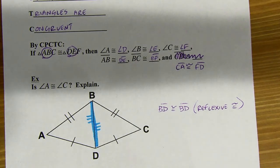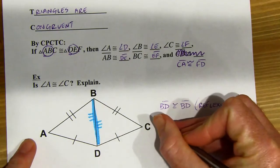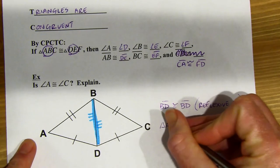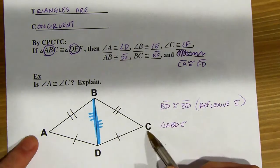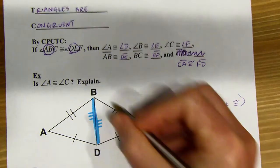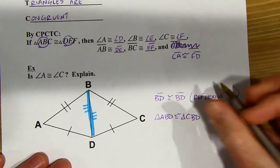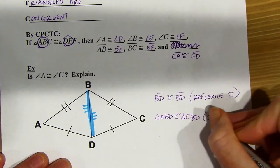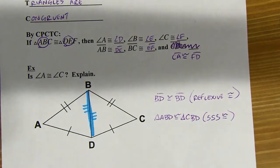Now I've got three sets of sides. I can say that the triangles themselves are congruent. I'll call the left triangle ABD. A was supposed to match up with C, and then B matches up with itself, and D matches up with itself. This would be the SSS Triangle Congruency Theorem, or SSS for short.